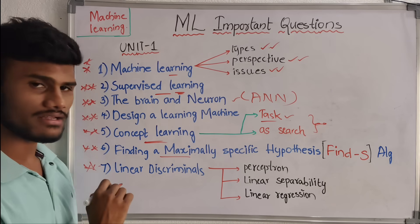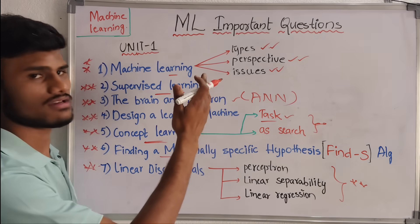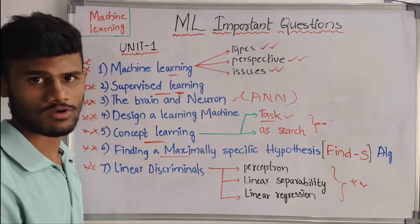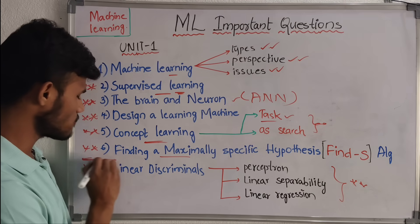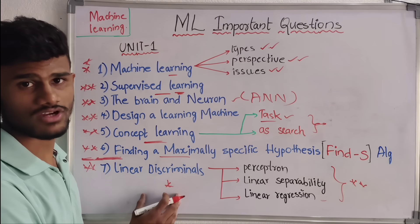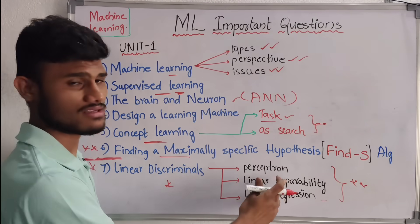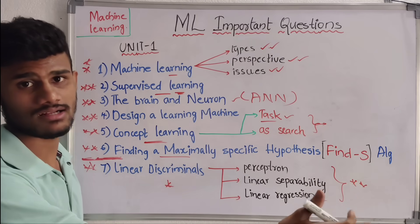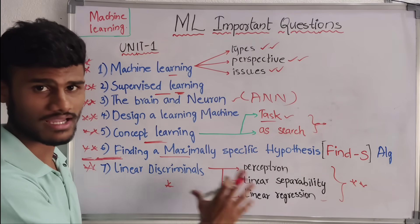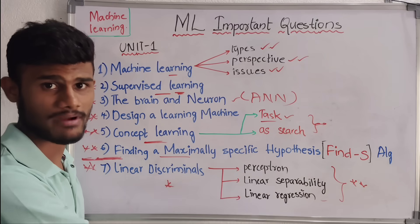Next we have Linear Discriminance. In Linear Discriminance we have three important questions. This is the most important thing, though it is not topic-wise. We need to take one topic as choice. These three topics are very very important, but we need to take one topic as choice, and we need to take more time to learn these topics. Take this entire topic as a choice — by combination we can cover these three questions in one question.